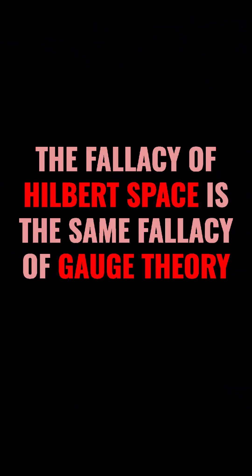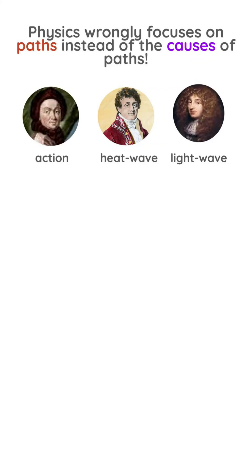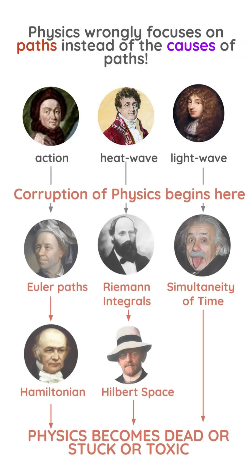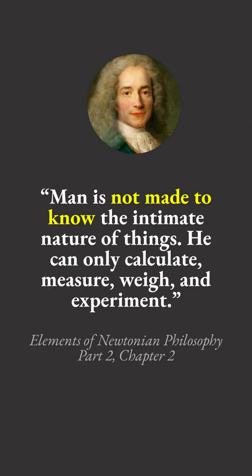The fallacy of Hilbert space is the same fallacy of gauge theory, which is caused by physics focusing on paths instead of what causes those paths. This is because physics only cares about visible measurements and not the invisible causes of phenomena.